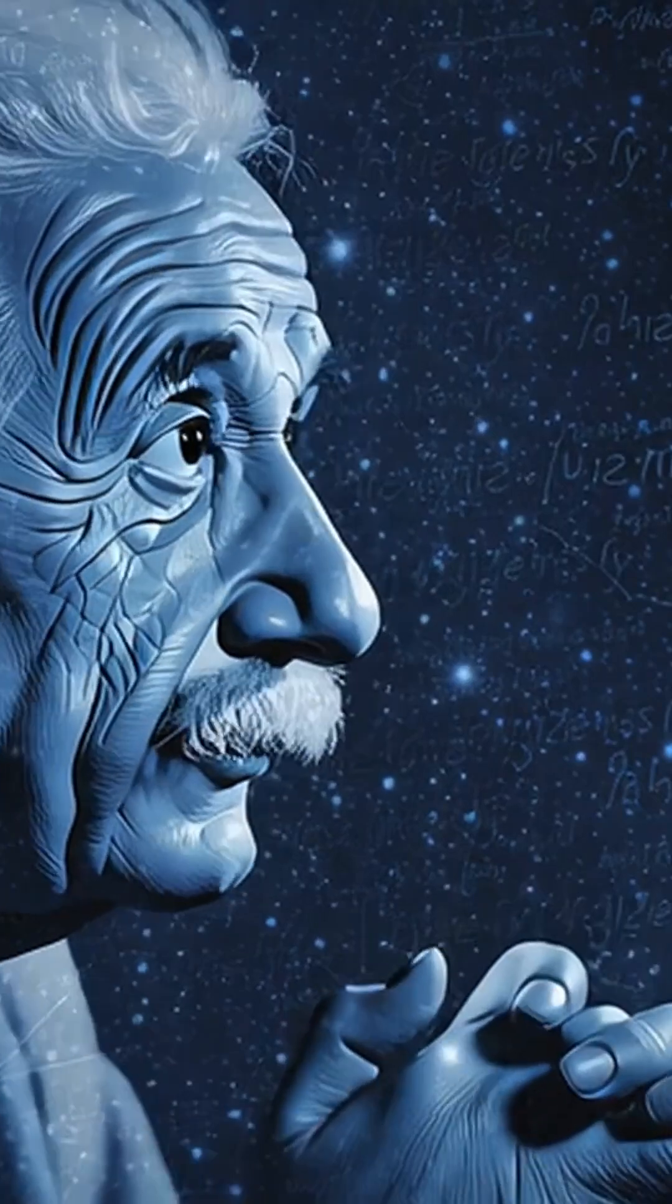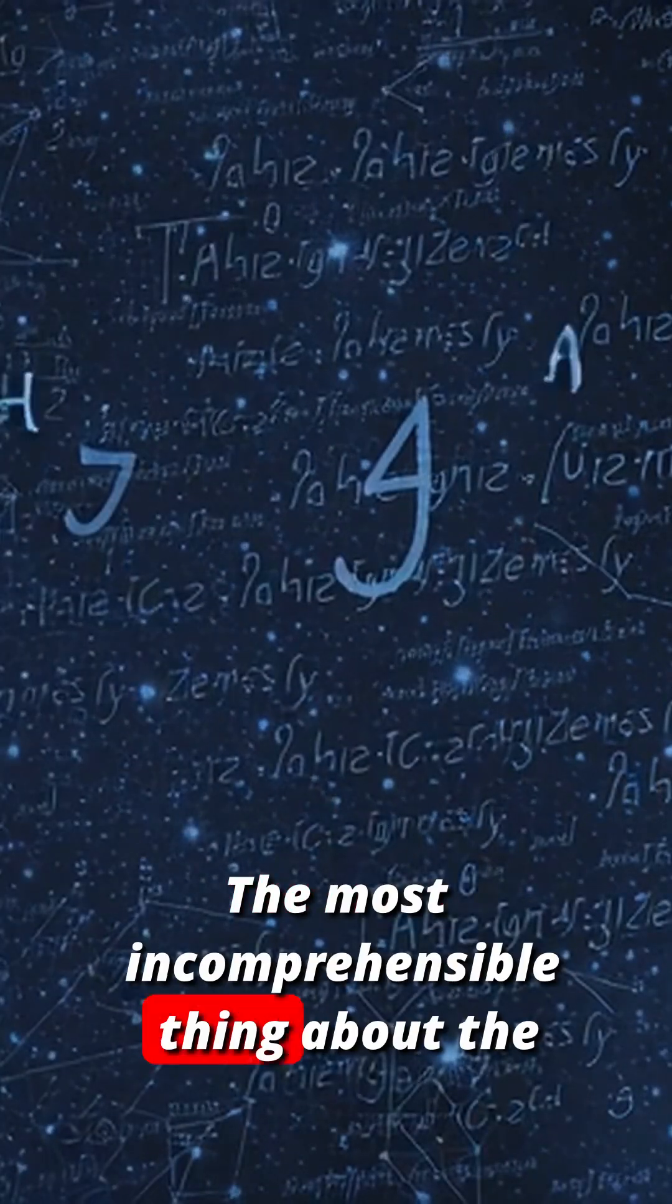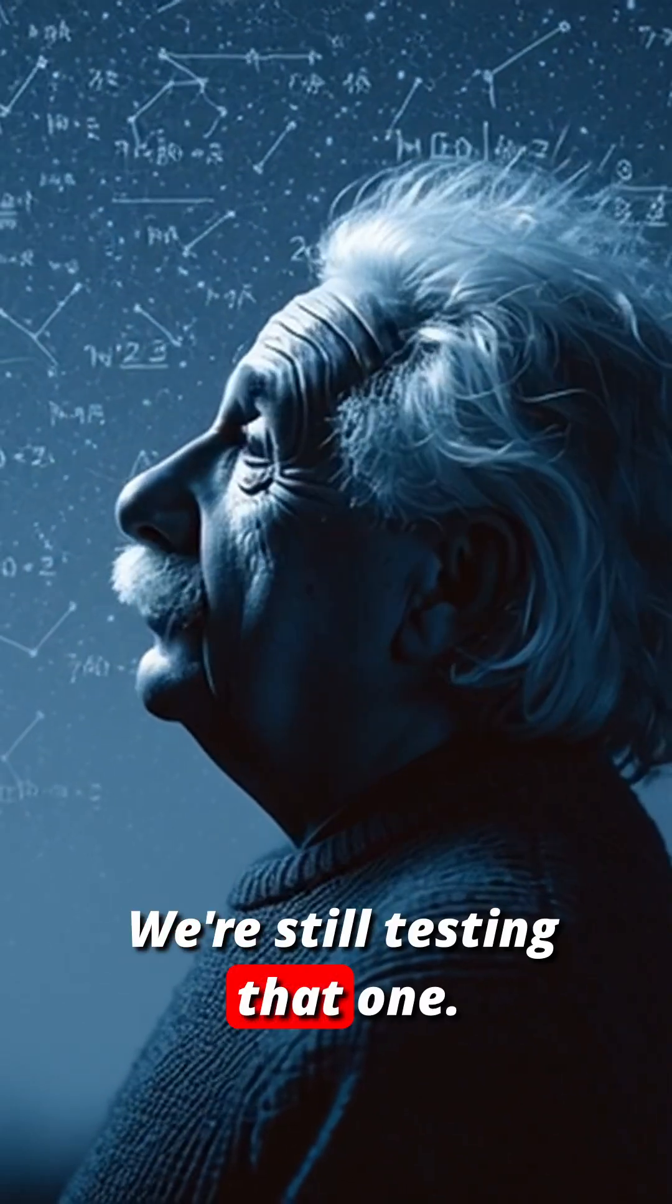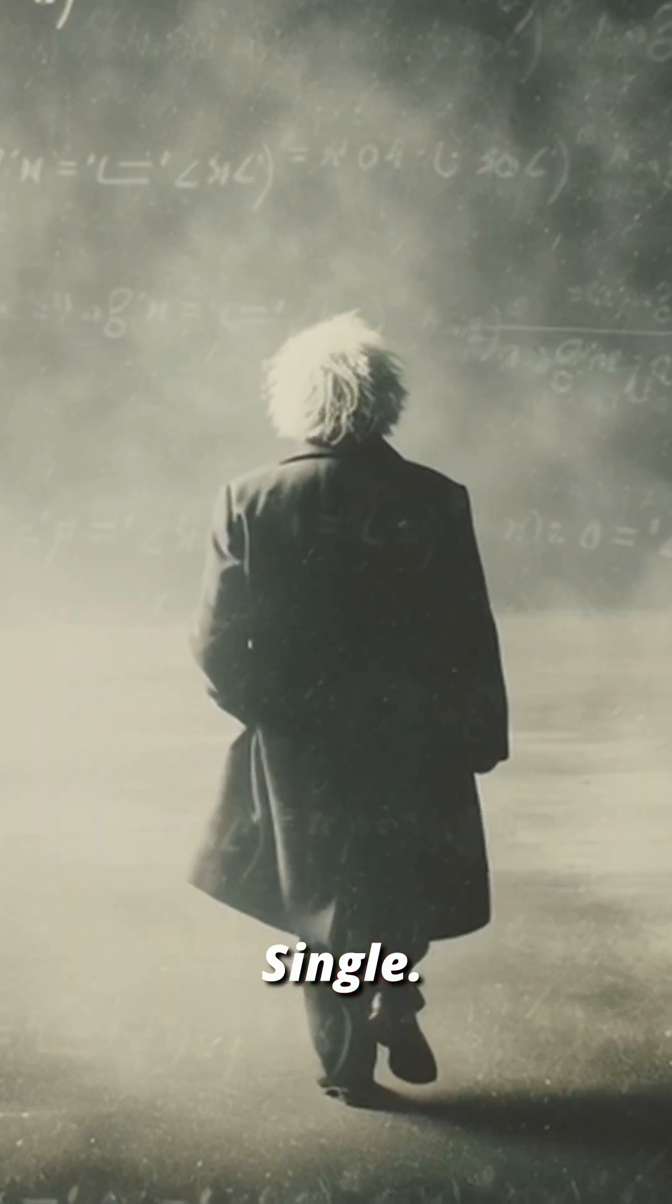Ten, the unknowable. Prediction: the most incomprehensible thing about the universe is that it is comprehensible. Reality: we're still testing that one every single day.